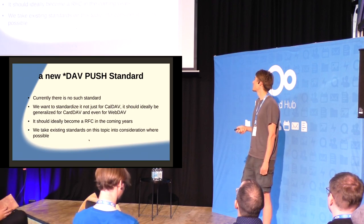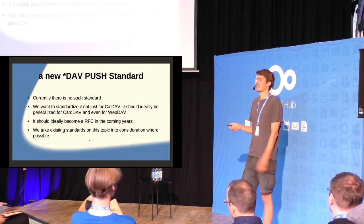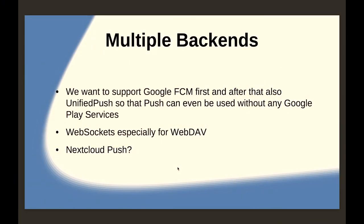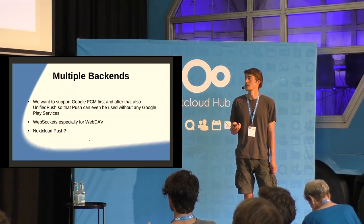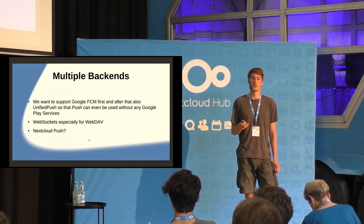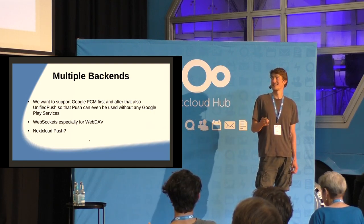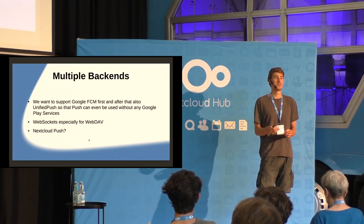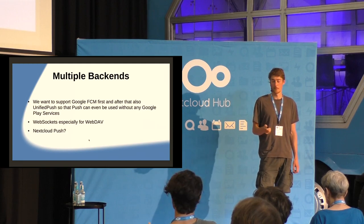We take existing standards into consideration where possible. Right now such a standard doesn't exist yet. Multiple backends we can use already exist. There's Google Firebase Cloud Messaging, which we're going to start building on top of because it's the most well-known and easiest to integrate. We also want to leverage the power of Unified Push, so that people not using Google Play Services can benefit as well. Then there's WebSockets, which we'll also take into account — they're especially interesting for WebDAV. And we know that Nextcloud Push exists; we would love to talk to the people who implemented it, so we can share information on how they did that and whether it could be useful for us.